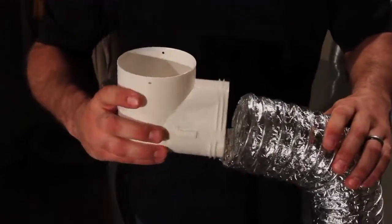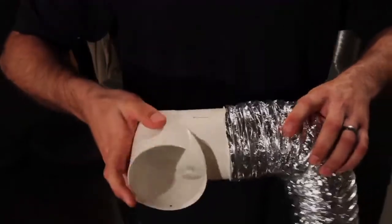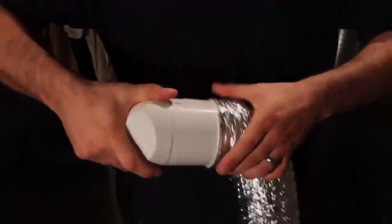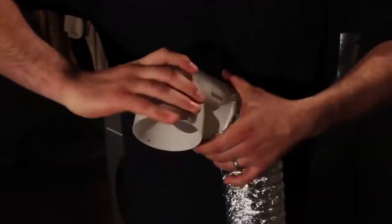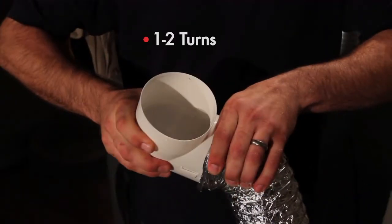If your kit comes with a foil-type ProFlex transition duct, stretch one end of the duct holding it securely with one hand, while threading the threaded end of the elbow into the duct. One to two turns of the elbow into the duct is adequate to securely fasten the two components together.